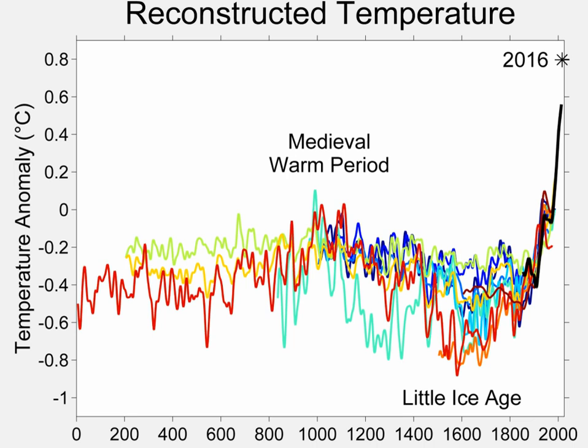A version of the MBH99 graph was featured prominently in the 2001 IPCC Third Assessment Report, which also drew on Jones et al. 1998 and three other reconstructions to support the conclusion that, in the Northern Hemisphere, the 1990s was likely to have been the warmest decade and 1998 the warmest year during the past 1,000 years. The graph was featured in publicity and became a focus of dispute for those opposed to the strengthening scientific consensus that late 20th century warmth was exceptional.